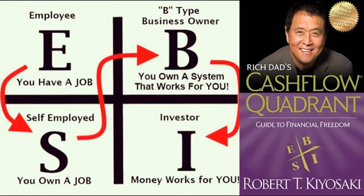Your two biggest expenses: Because my dad could not read financial statements, he could not see the money trap he was getting into as he grew more successful. The reason so many people struggle financially is because every time they make more money, they also increase their two biggest expenses — taxes and interest on debt. To top it off, the government often offers you tax breaks to get deeper into debt. The problem is most people have not been trained to work from the B, business owner, and I, investor quadrants. Because of this lack of training, the programming into job security, and their increasing amount of debt, most people limit their search for financial freedom to the left side of the cash flow quadrant.